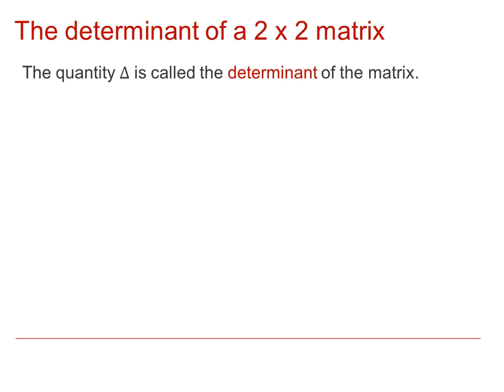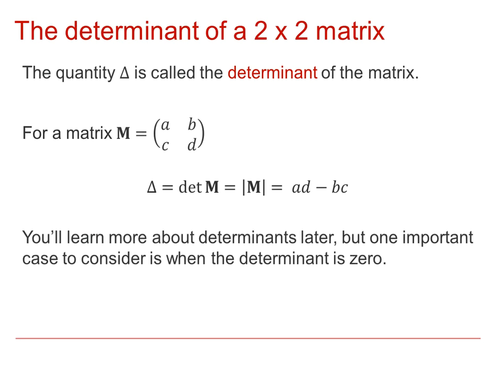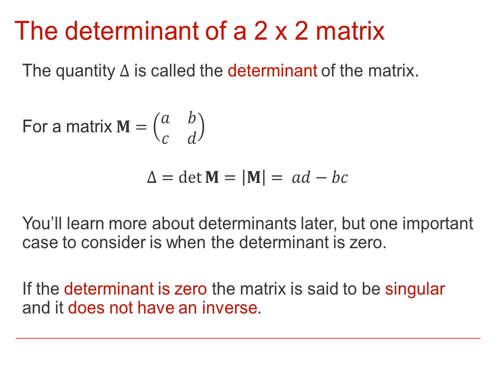The determinant of the matrix then, just to reiterate, is the product of the leading diagonal minus the product of the other diagonal. There's one important thing that we need to consider, and that's when the determinant is equal to 0, because you'll realize that we're dividing by the determinant to work out the inverse of a matrix. If the determinant is equal to 0, we have a problem there. The fact that the determinant is equal to 0 gives us what's called a singular matrix. If a matrix has determinant 0, it's said to be singular, and then its inverse will not exist, because 1 over 0 doesn't exist.